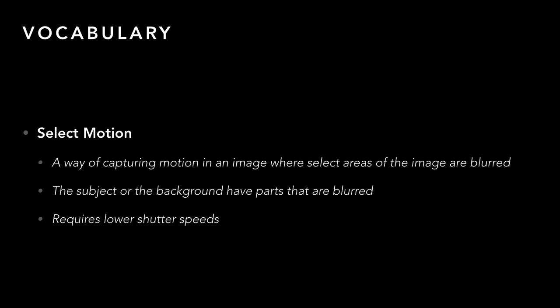The second type of motion is select motion — playing with ways of capturing motion where part of the area you're selecting on purpose is blurred. There are two ways to do this: the first is just letting something move through your image while keeping your camera still; the other is having your camera follow the motion, which is a little more difficult. With select motion, either part of your subject, the background, or parts of both are blurred. This requires lower shutter speeds, so on a sunny day set your ISO to 100 and use a high aperture number. This may be easier to shoot at dusk so your camera doesn't need to go quite as fast.